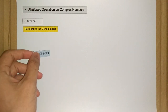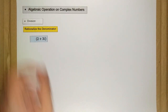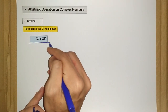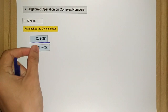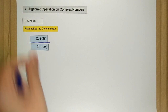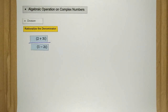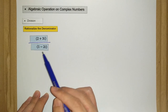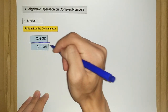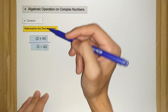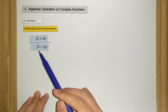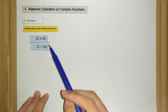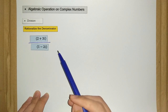Let's say we have 2 plus 3i divided by 1 minus 2i. We will focus on the complex conjugate of the denominator. The first step to rationalize the denominator is we want to change this complex number in the denominator into a real number.